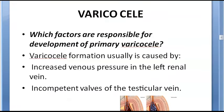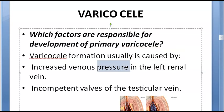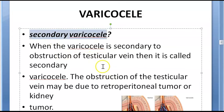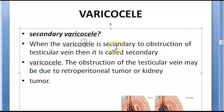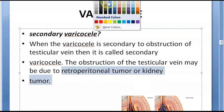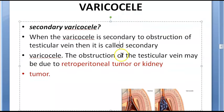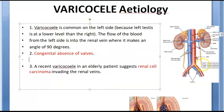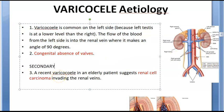There is primary and secondary varicocele. Primary varicocele is caused by increased venous pressure in the left renal vein and incompetent valves of the testicular vein. Secondary varicocele is due to something else — a tumor of the kidney or a retroperitoneal tumor. So renal cell carcinoma and retroperitoneal tumors cause secondary varicocele.